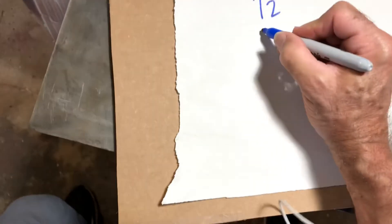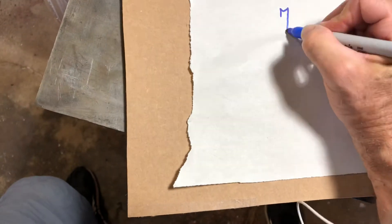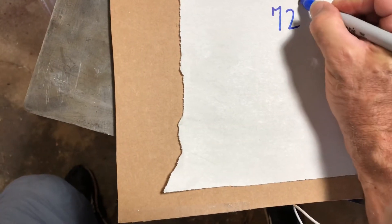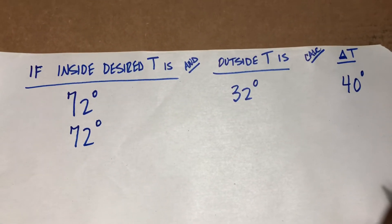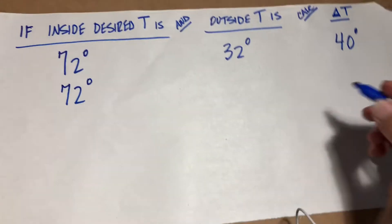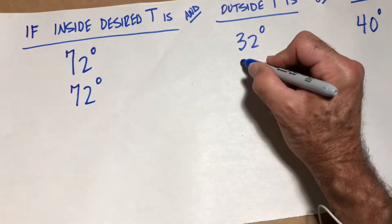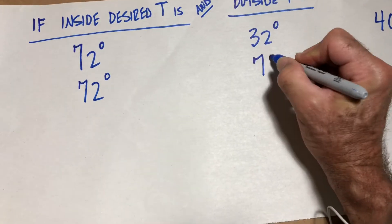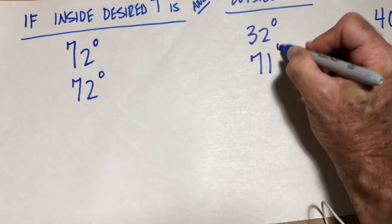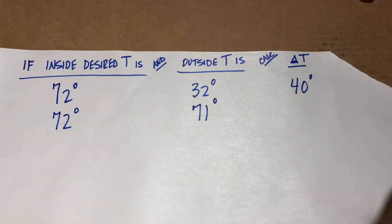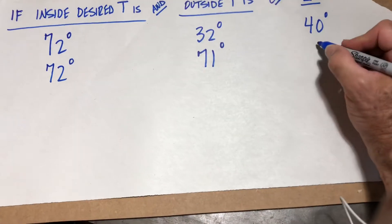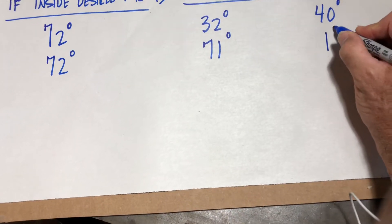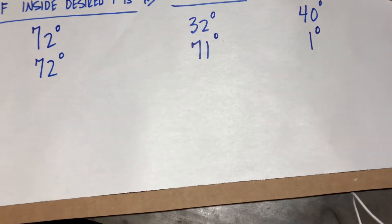What if our desired indoor temperature is 72 degrees and the outside temperature is 71 degrees? What's delta T? Delta T is 1 degree.